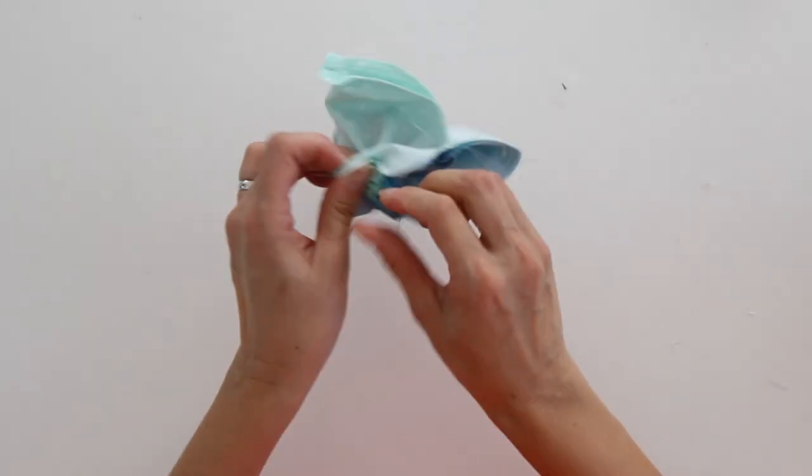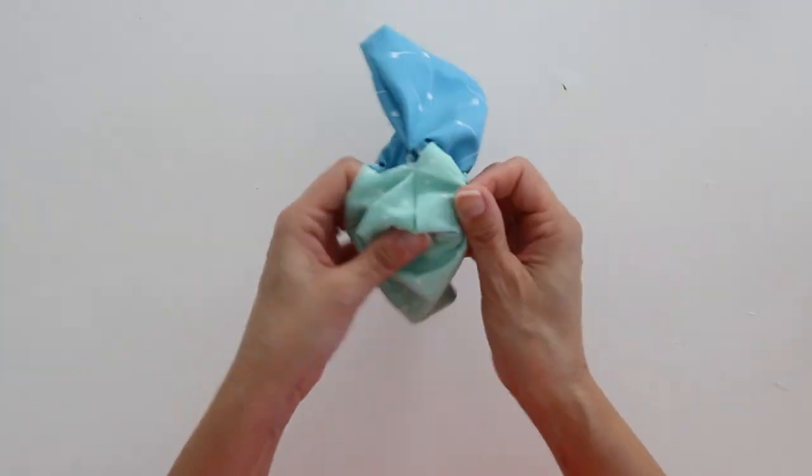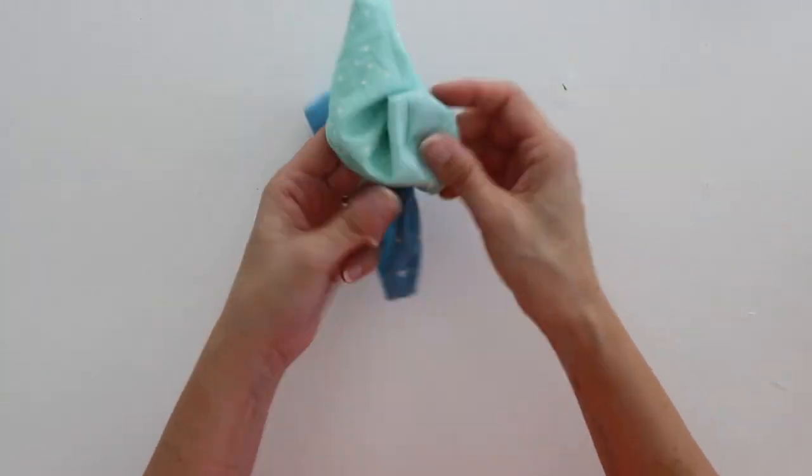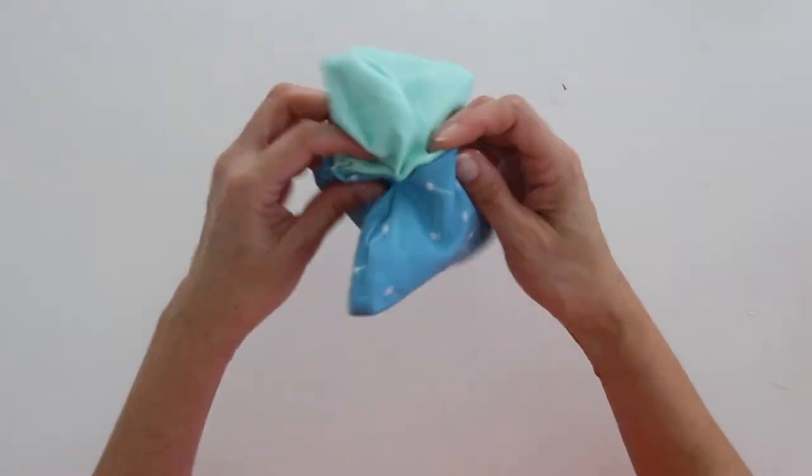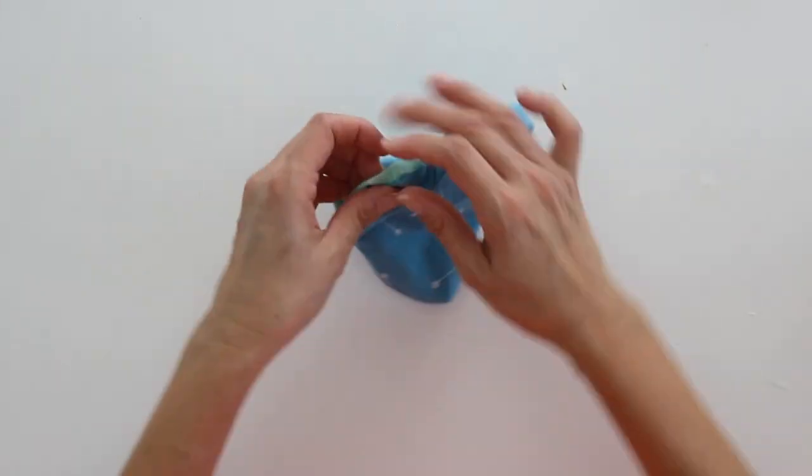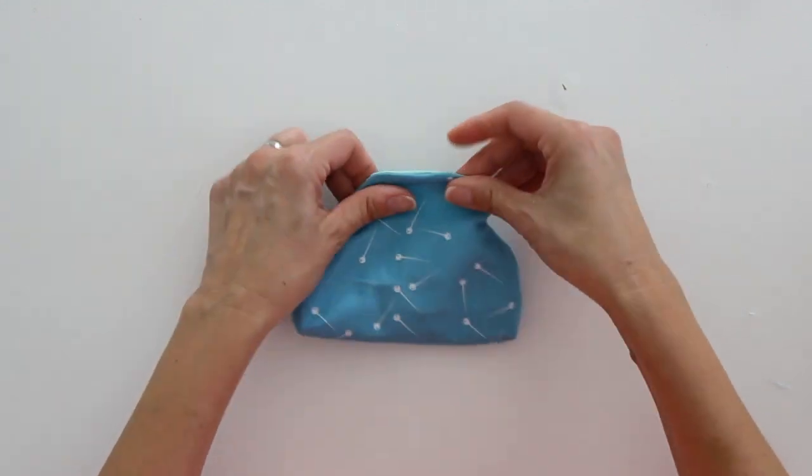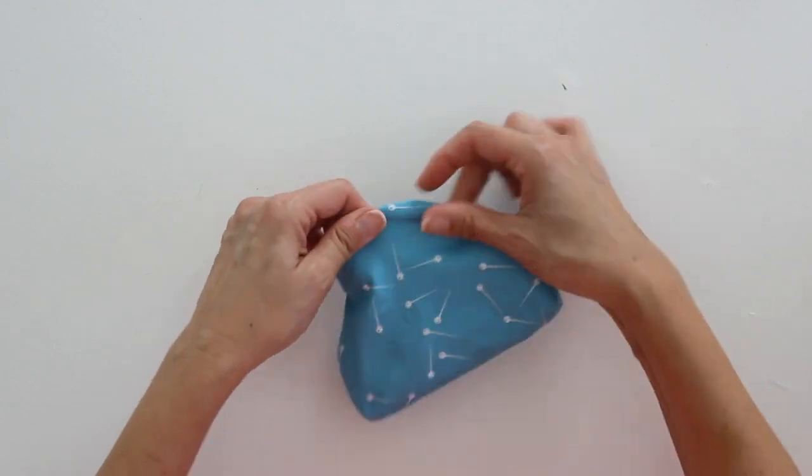Now I'm going to turn the whole thing right side out through that gap that I left. Make sure you poke out the corners that you stitched, and then whichever side is supposed to be the outside, make sure it's outside, and put the inside to the inside. And then on this top curved edge, make sure that you are pulling this all the way out.